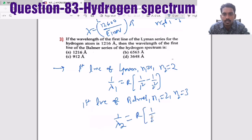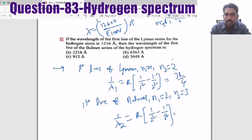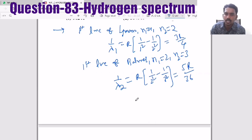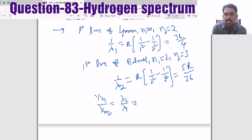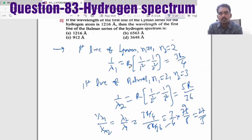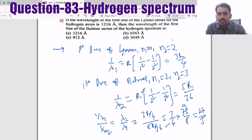Dividing the two equations: λ2/λ1 = (3R/4)/(5R/36) = (3/4)×(36/5) = 27/5. So λ2 = 27λ1/5, where λ1 = 1216 Å. The way of asking a question may be different, but it is the same equation — you have to frame and solve the equations. Another question: energy levels A, B, C of a certain atom correspond to increasing energy values Ea < Eb < Ec. Given Ec − Eb = hc/λ1, Eb − Ea = hc/λ2, and Ec − Ea = hc/λ3, adding the first two: hc/λ1 + hc/λ2 = hc/λ3, giving the required relation.